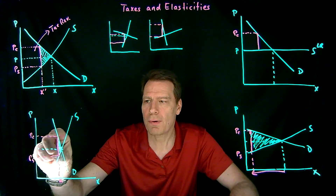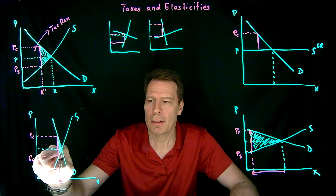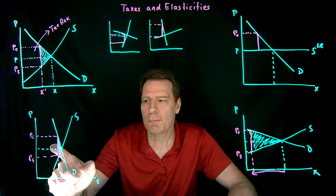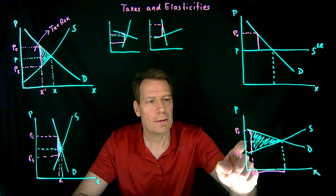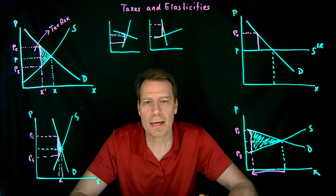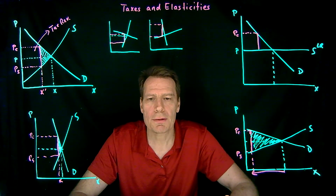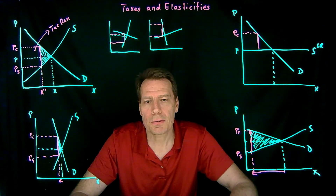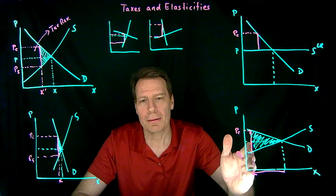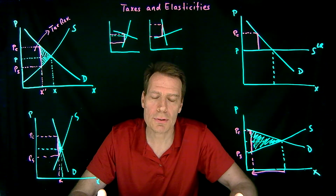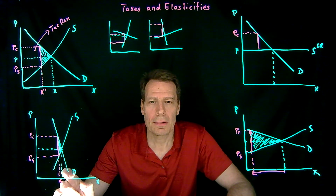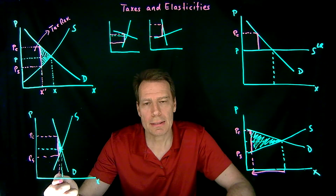We also see that the tax revenue box is large with inelastic curves, but small with elastic curves. The government gets to collect a lot of tax revenue when demand and supply are inelastic. It doesn't collect very much when they're elastic, because output fell by so much. If consumers and producers are relatively price elastic, they respond a lot to the tax increase, so there's much less to tax and tax revenue is lower. In summary, tax revenue is larger and deadweight loss is smaller the more inelastic demand and supply are.